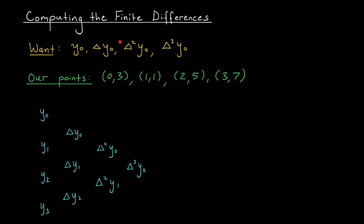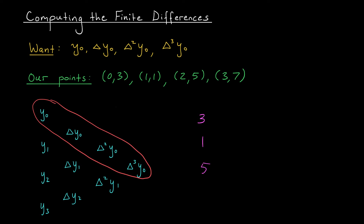Alright, let's see how this works with our particular set of data points. We start with the first column, which is made up of our y values. So my first column is going to be 3, 1, 5, and 7. To get the next column I start taking differences of two terms at a time.